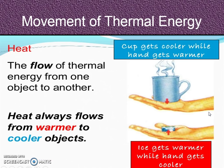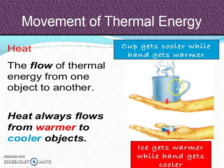How does thermal energy move? Heat is the flow of thermal energy from one object to another. Heat always flows from the warmer object to the cooler object — always. Look at this cup: you can see the steam coming off, so it's warm — like hot chocolate. The cup's going to get cooler while the hand gets warmer, because the heat is always flowing from the warmer object to the cooler. The hand is cooler, so the heat from the cup comes to the hand. The outside air is cooler, so the heat also goes up into the air.